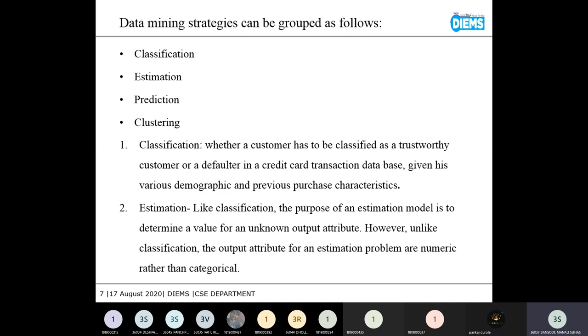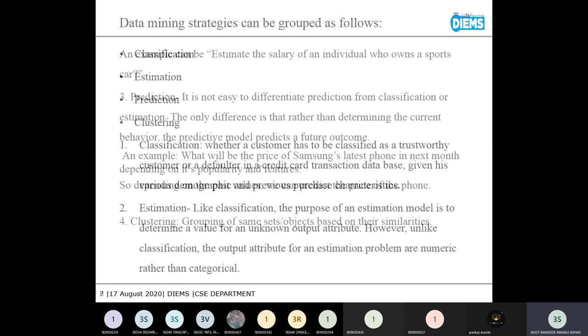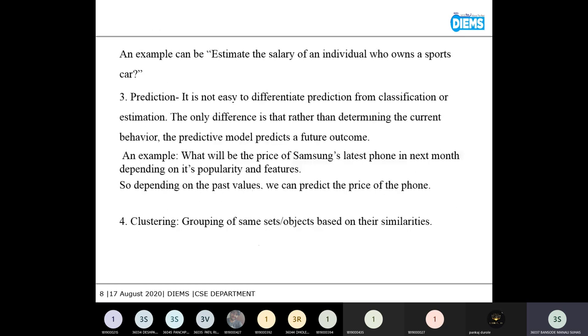Next is estimation. Like in classification, the purpose of estimation model is to determine a value for an unknown output attribute. However, unlike classification, the output for an estimation problem are numeric rather than categorical. Here is an example. Estimate the salary of an individual who owns a sports car. In estimation, we don't have any huge data sets. We only have to estimate by the current situation.